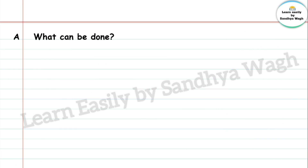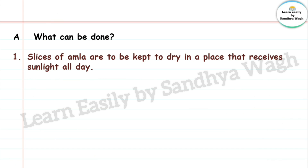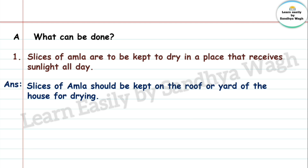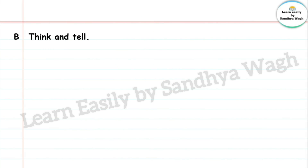Question: Slices of amla are to be kept to dry in a place that receives sunlight all day. What can be done? Answer: Slices of amla should be kept on the roof or yard of the house for drying. We can keep them on the rooftop or in the courtyard of the house.